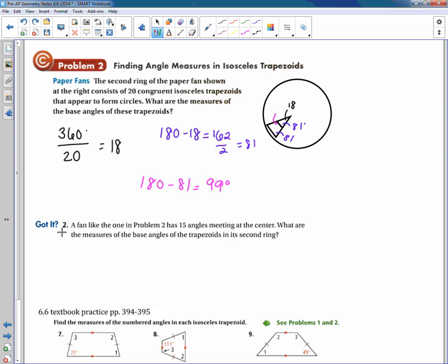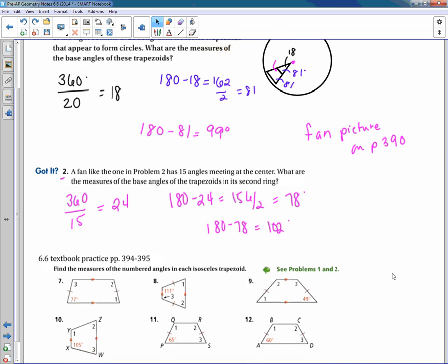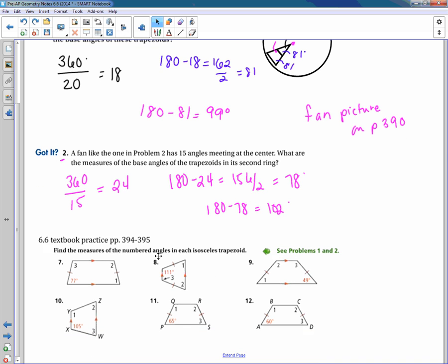Let me pause for just a second while you can do a fan that has 15 angles meeting at the center. Hopefully, you got 78 and 102 for that one. Did we get 78 and 102, folks? Yes? Okay. Here are your first practice problems. They're found on page 394, 395. And I've included them in your notes so that you can match them to the theorem or postulate that actually explains how to work these. Okay? So this would be 7 through 12. And you can work on these when you get finished filling out your notes.